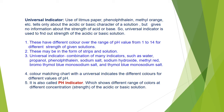Universal indicators are a combination of many indicators such as water, phenolphthalein, propanol, sodium salt, sodium hydroxide, methyl red, bromothymol blue monosodium salt, and thymol blue monosodium salt. Color matching with the universal indicator shows different colors at different pH values. It is also called a pH indicator, and by observing the color change we can find out the strength of an acidic or basic solution.